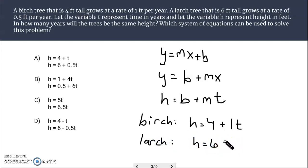And then there's the larch tree, starts out at six foot, and it grows at a rate of a half a foot a year, 0.5 feet per year. So, 0.5 times t. And the system that seems to match that is letter A.